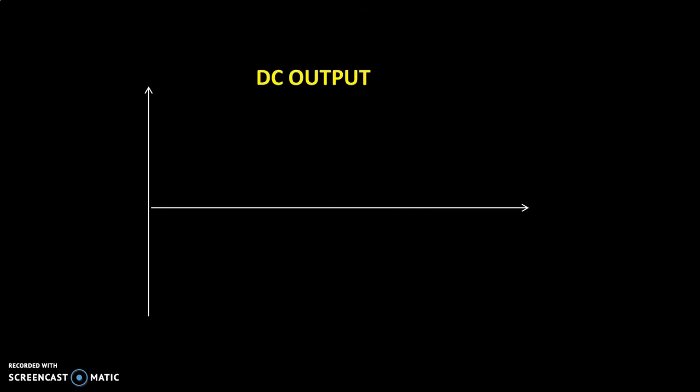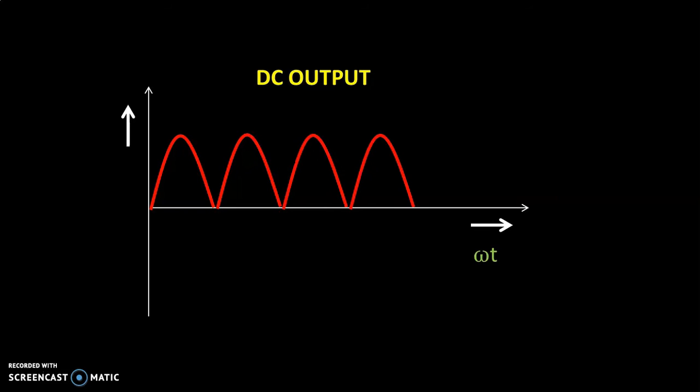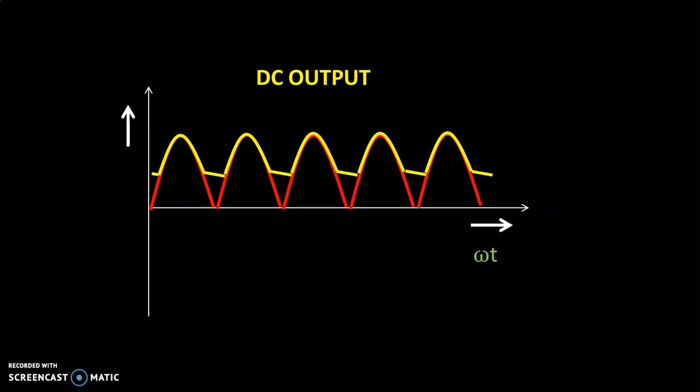Now let us see the waveform of the full wave rectifier. We know that during the positive as well as the negative half cycle, conduction of the diode takes place and we get a pulsating type of output waveform. But it is unidirectional and that is why we call it DC output. If we see the actual waveform, it contains certain AC components which must be removed before the application of this DC voltage to any device. We use filter circuits and get very near to smooth DC, depending on the type and value of the filter circuit used.